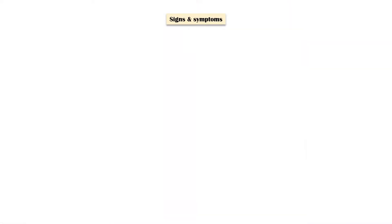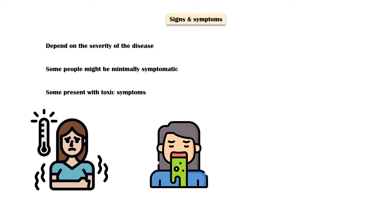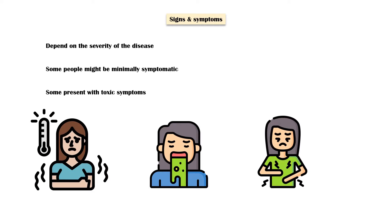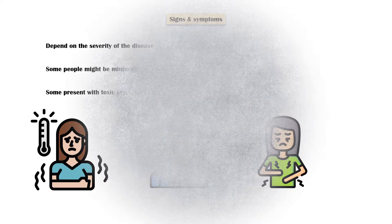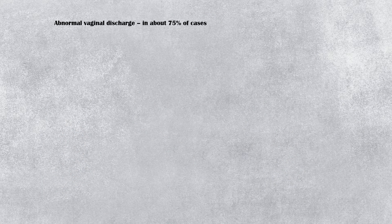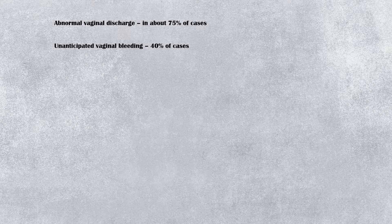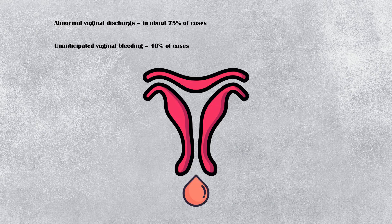Signs and symptoms depend on the severity of the disease. Some people might be minimally symptomatic, while others may present with toxic symptoms such as fever, nausea and vomiting, and severe abdominal and pelvic pain. Abnormal vaginal discharge is present in about 75% of cases, and about 40% will have unanticipated vaginal bleeding. Approximately one-third of women will have abnormal uterine bleeding.